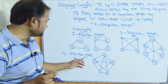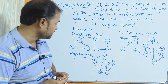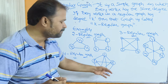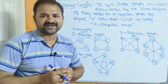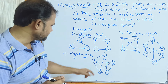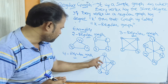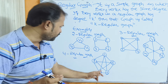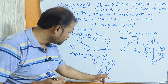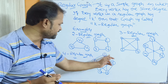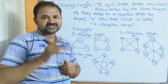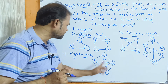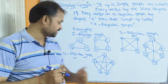This is an example of a 4-regular graph, which is nothing but a complete graph of 5 vertices. From vertex 1, we have edges to 2, 3, 4, and 5. Every vertex is associated with 4 edges, so the degree of every vertex in this graph is 4.